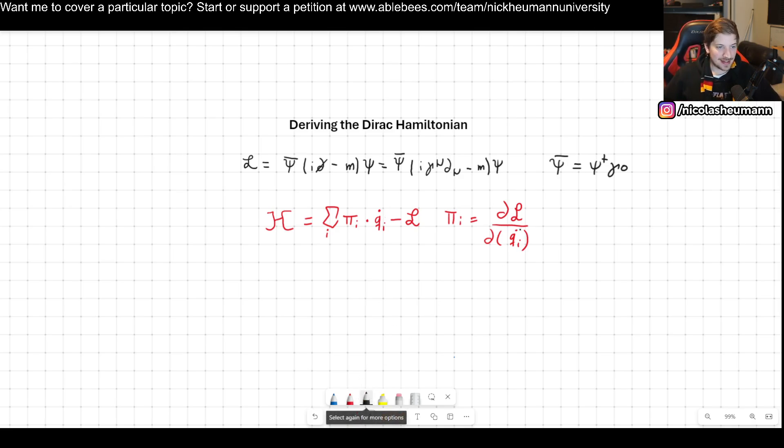Having said that, keep in mind we can find the canonical momenta by taking the Lagrangian density and taking the derivative with respect to the coordinate dot. In this case, it's going to be psi dot or psi bar dot, depending on which one we're finding. So let's begin.